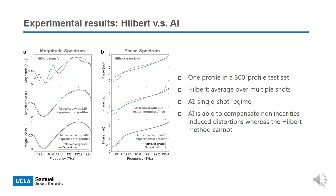This page shows the experimental results of both the Hilbert method and AI. For AI, we show two versions: one trained with a small training set and the other trained with a large training set. The figure shows one retrieved profile result. Note that the results from the Hilbert method are averaged over multiple frames, whereas for AI the results are based on a single-shot frame. Both AI models outperform the Hilbert method. In the upper part of figure A, ripple is caused by nonlinearities. The nonlinearities of the DCF used for time-stretch exist in the magnitude retrieved by the Hilbert method; however, AI is able to compensate for nonlinearity-induced distortions.